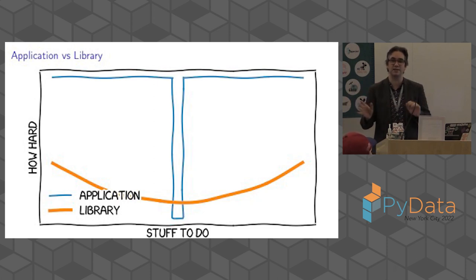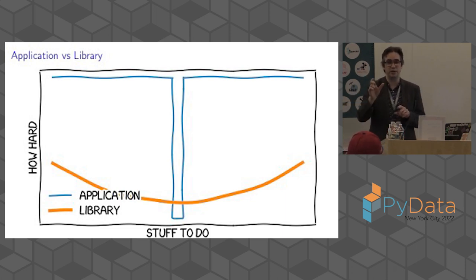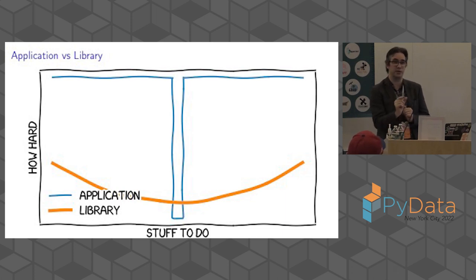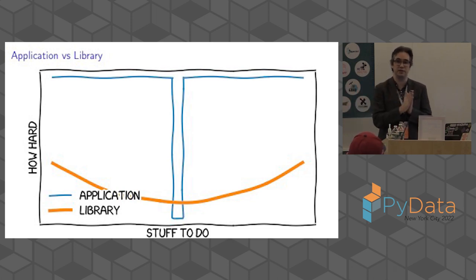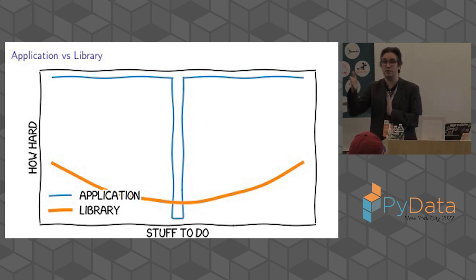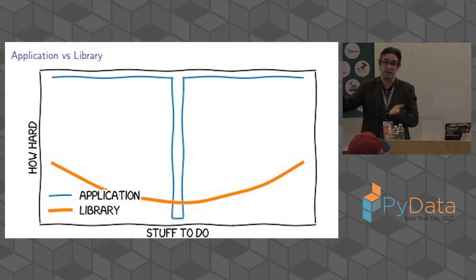A pictorial way of looking at this: if the horizontal axis is all the things you might want to do with a computer and the vertical axis is how hard it is, in the case of an application you have an energy landscape with a very deep, narrow gap. If you want to do exactly what that application does, life is great. But if you want to move away from what the authors imagined, you're likely to hit a cliff — either it's not possible, or you end up building elaborate constructs to work around the assumptions the application made. Whereas a library has a gentler energy landscape — it's a little harder, but as you move away from the initial case it's still possible, and you can build your own application bringing that valley down somewhere else.